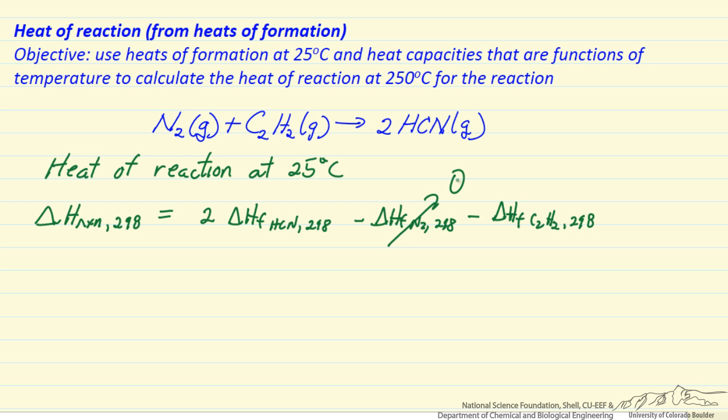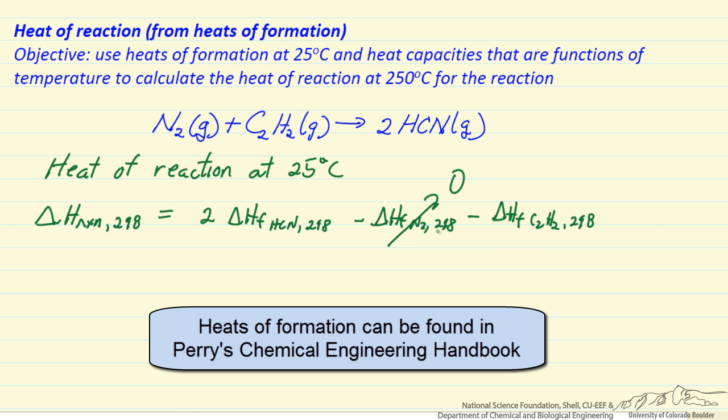Now this is zero because it is an element and heats of formation are the enthalpy change when we go from elements to the particular species. So to make HCN we are reacting the elements: hydrogen is H2, carbon as graphite and nitrogen is N2 to make HCN. And then we can look up in a table the remaining values.